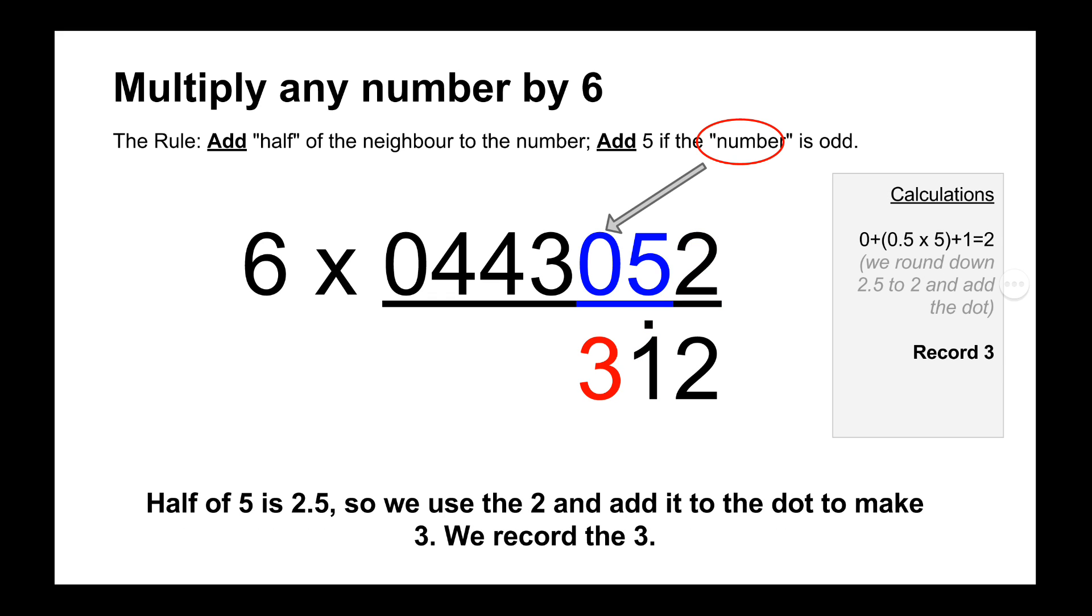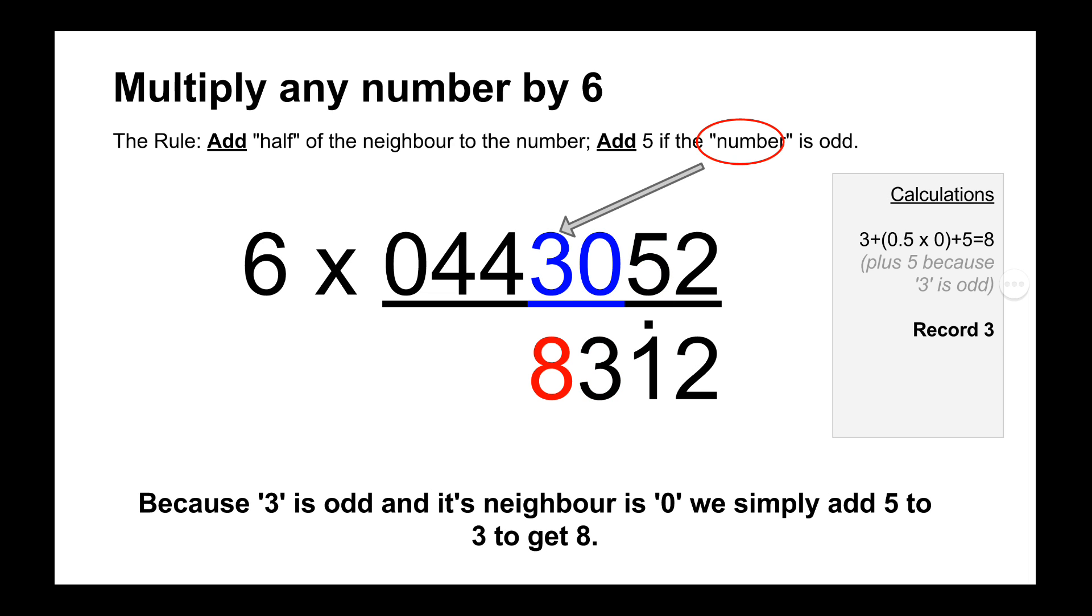And then we move across and we see that the next digit is 0. So half of its neighbour to the right, which is 5, is actually 2.5. But we ignore the 0.5, the fraction, and we just record the 2. And then we add that on to the number, which is 0. So 2 plus 0 is 2. And then we add on the carried 1 from the previous answer represented by the dot. So that would be 2 plus the dot equals 3. So then we record the 3. And then we move on to the next digit, which is 3. So we half its neighbour. So half of 0 is 0. So we still have 3. And because 3 is an odd number, we add 5 to it to get 8. So then we record 8.